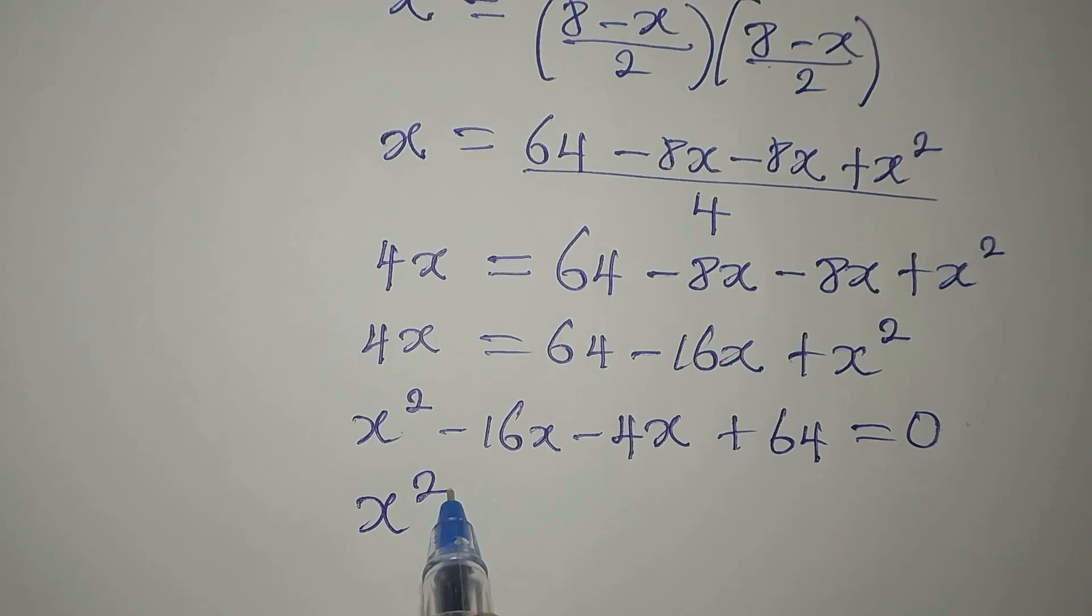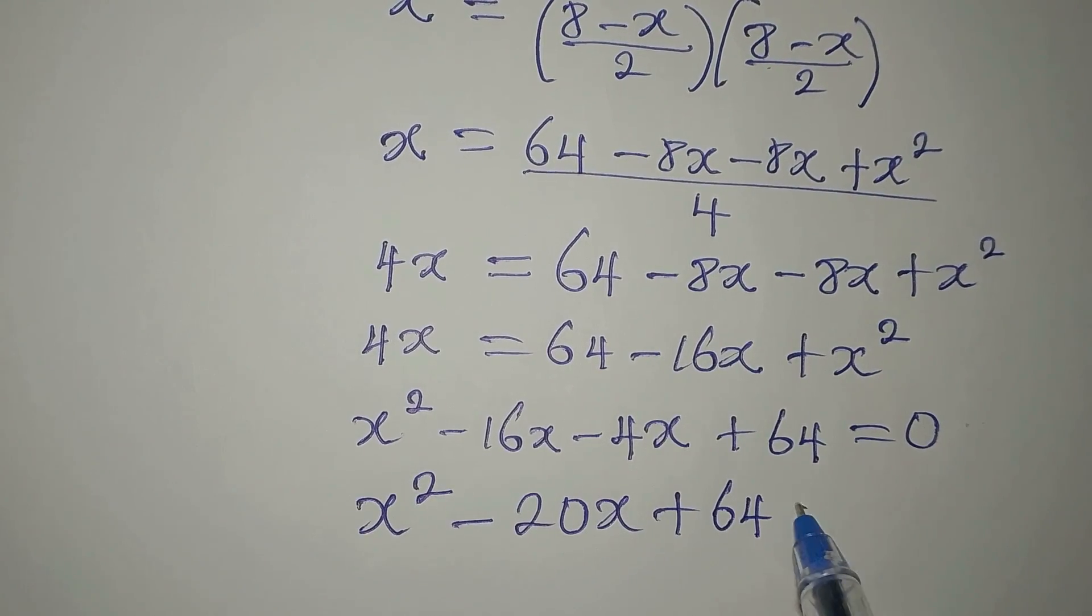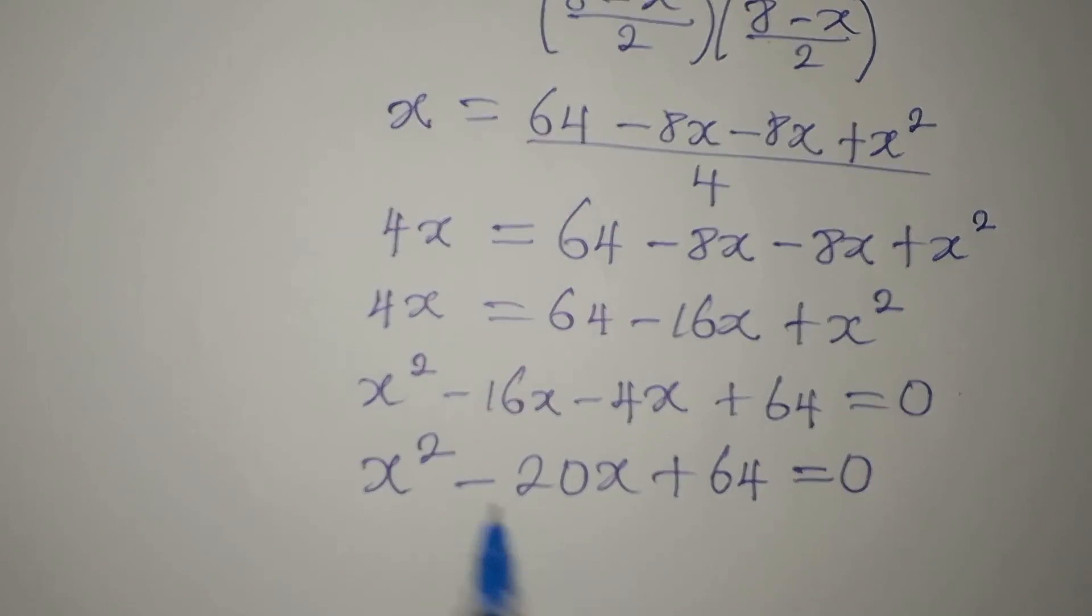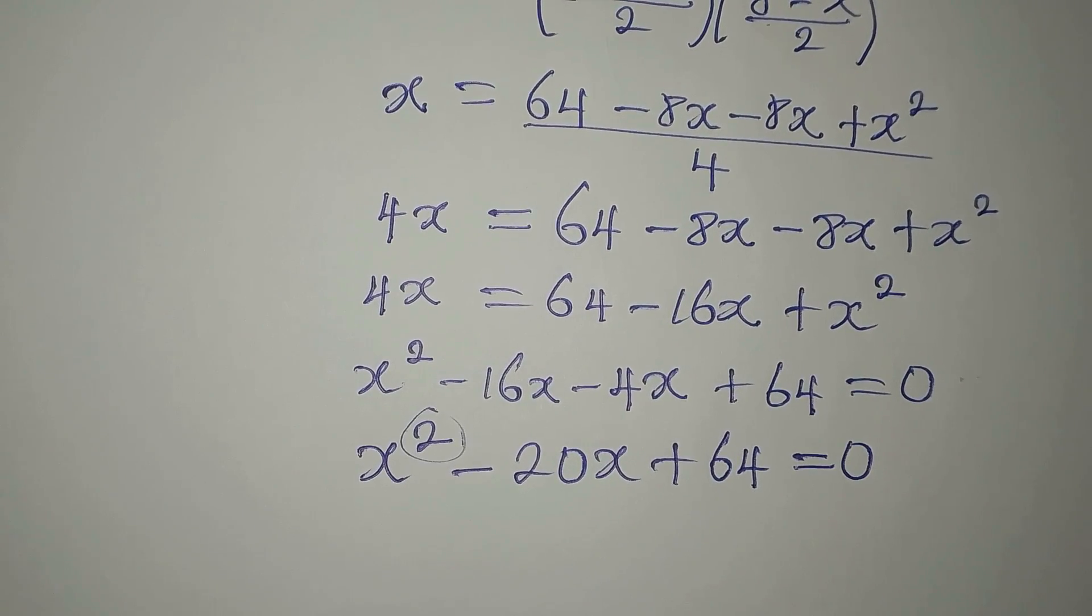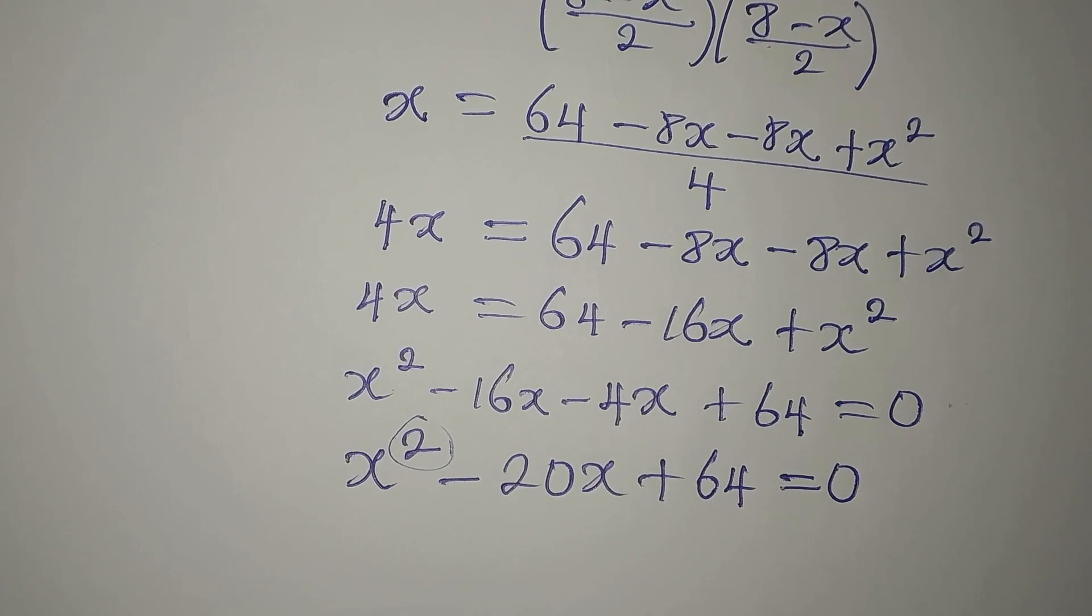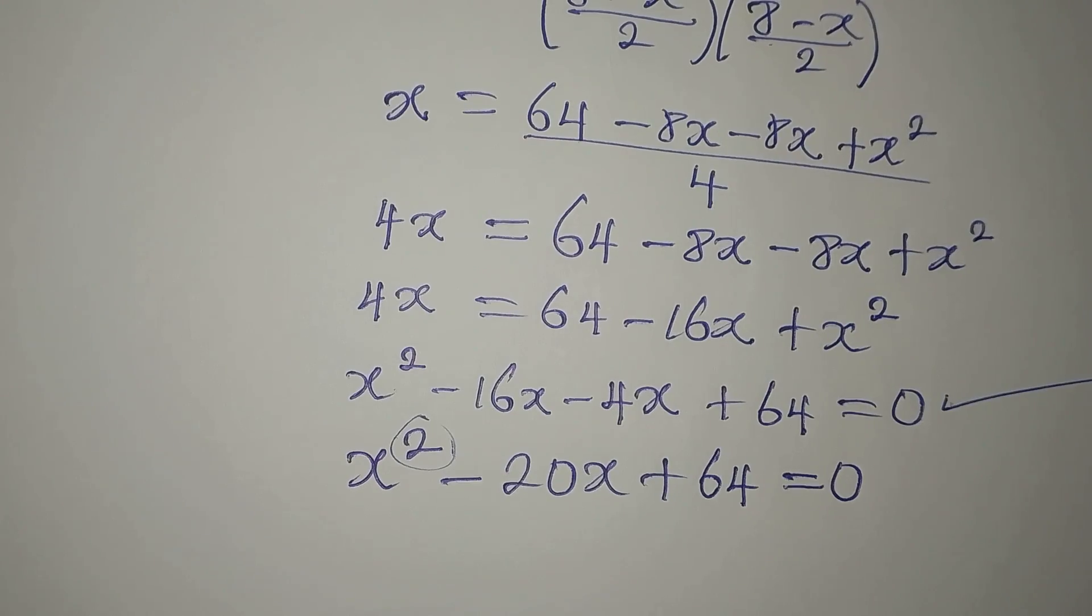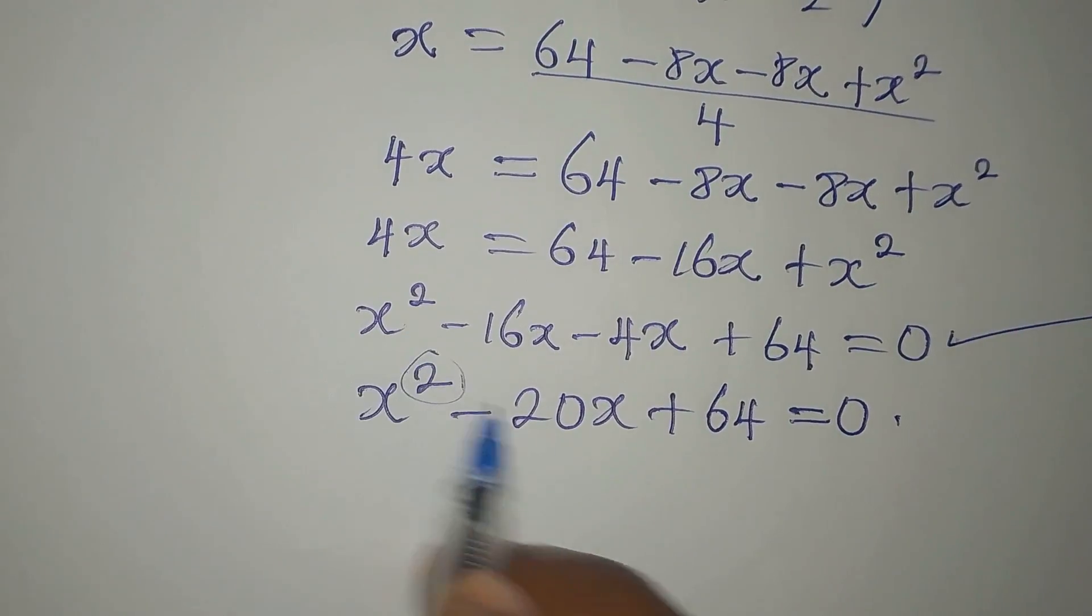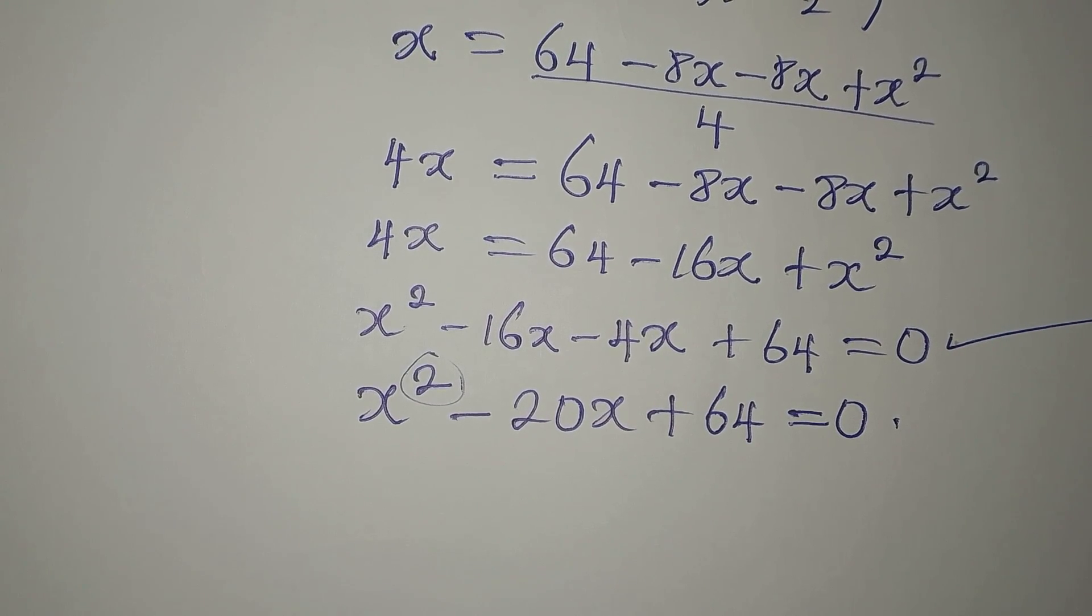So now we have x squared. This and this will give us negative 20x. Then we have plus 64. This is now equal to 0. We now have a quadratic equation because of this power of x and because of the equality sign and the unknown variable. So let's solve this quadratic equation. Let's look for two numbers that will multiply to get 64 and we add the two numbers to get minus 20.